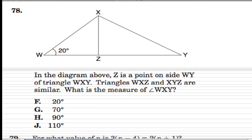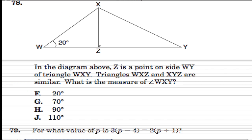Up next, we have a problem regarding angles. It's easy to get lost with all the points and all the names of the angles. Here they are — we have w, x, z, and y. They say z is a point on the side wy. Most of these diagrams are not to scale, so you have to think of the rules they give you in the problem and don't assume anything. Triangles WXZ and XYZ are similar, which means that the corresponding angles are going to be equal, and their side lengths might be different but they're proportional — if one triangle is twice as large as the other, every side will be exactly twice as large, but the corresponding angles won't change.